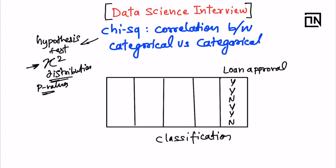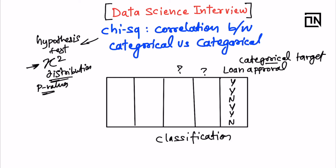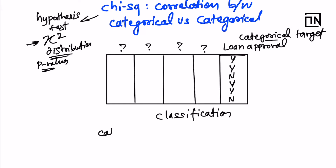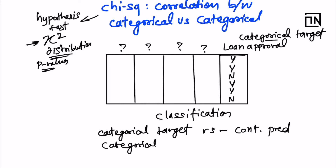The context here is of a supervised machine learning classification scenario. This particular scenario happens when you have a target variable which is categorical — for example, a loan approval target variable. When judging predictors, you'll face two scenarios: either categorical target variable versus continuous predictor, or categorical target versus categorical predictor.